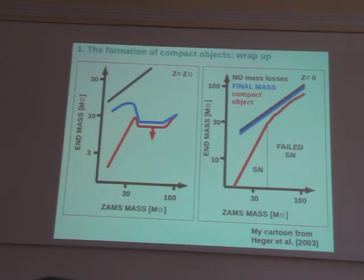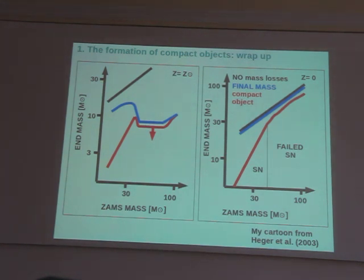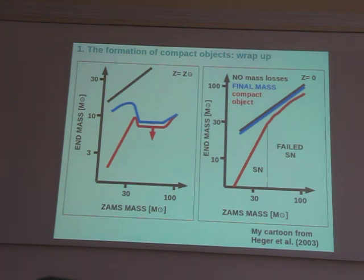These two plots represent the final mass of the star and the compact object as a function of the initial mass of the star. In this panel we see it for solar metallicity — solar metallicity means very high metallicity — and here you see it for zero metallicity. Stars with zero metallicity are the very first stars in the universe. Zero metallicity is easier to model.